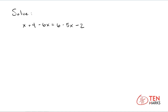To do this, begin by combining like terms on both sides of the equation so that we can simplify this. Here you have x and you have negative 6x, so you're going to subtract. x minus 6x is negative 5x and you're left with the constant on the left side.